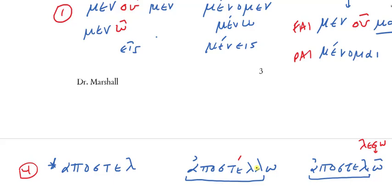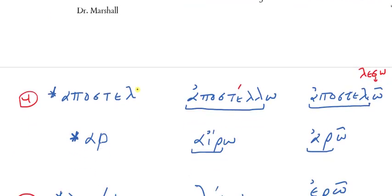You see how, these are both liquid futures, but they're following the patterns that we already laid out. So, liquid future is not a pattern, liquid futures follow the other patterns. Here's ar, airo, I take up, present, aro, from ar-e-so, drop the sigma, contract, aro, I will take up. Notice that this is following pattern four as well.